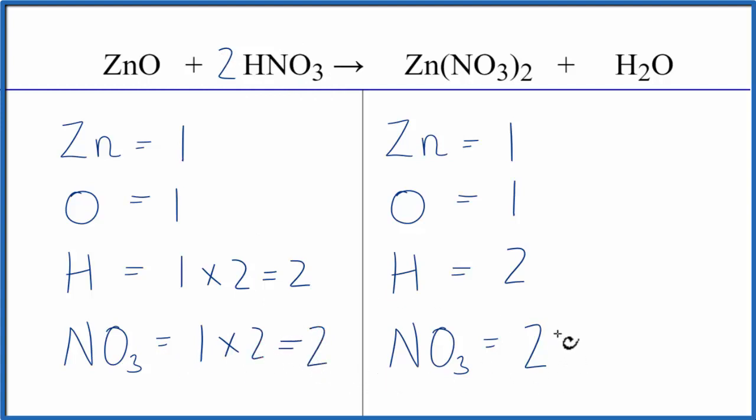So that greatly simplifies how we balance equations when we treat the polyatomic ions as the same thing as long as they appear on both sides of the equation.